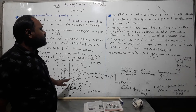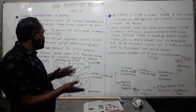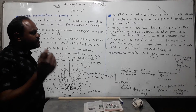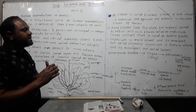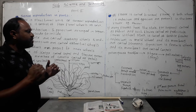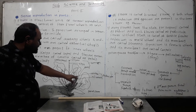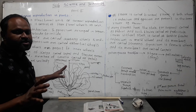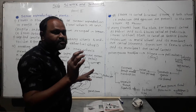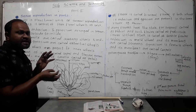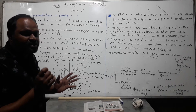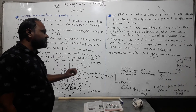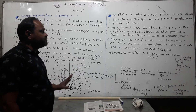When pollen grains stick to the stigma, this process is called pollination. Pollination occurs via two types of agents: abiotic agents such as wind, air, and water; and biotic agents such as insects. Via insects or via air and water, pollen grains are transferred to the stigma.